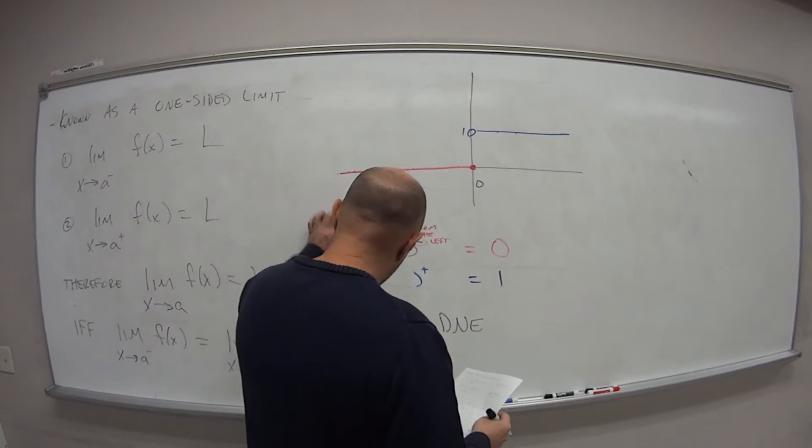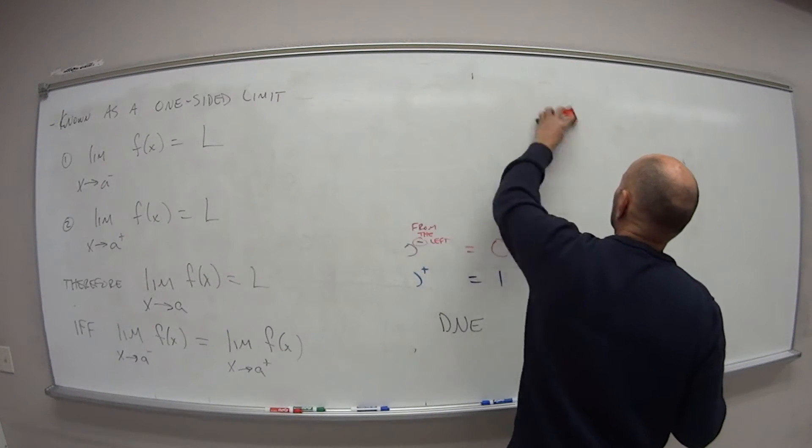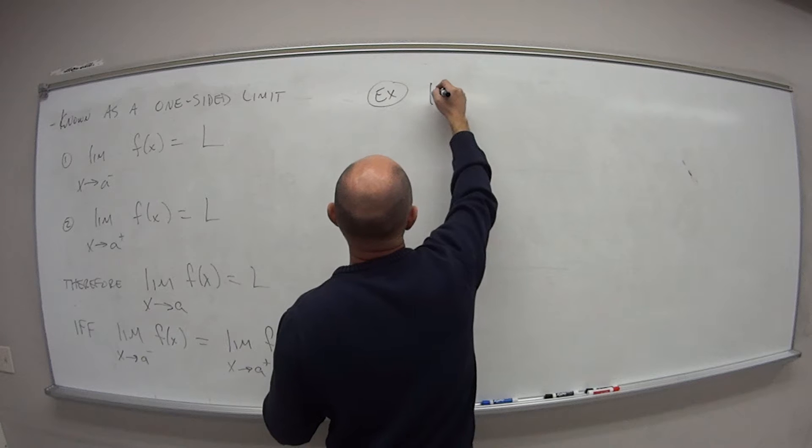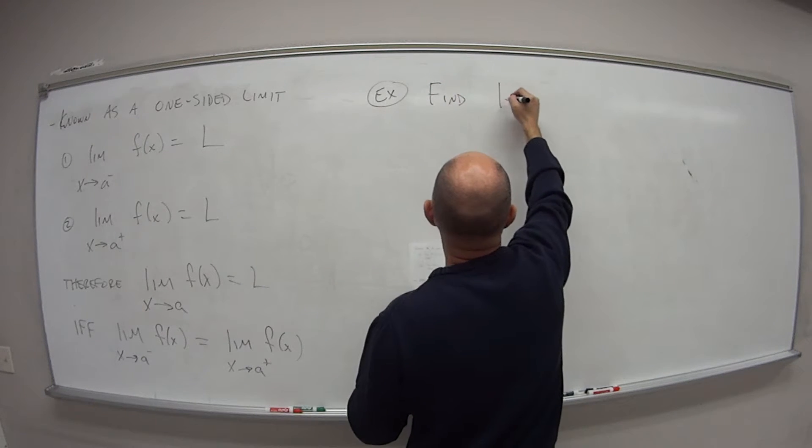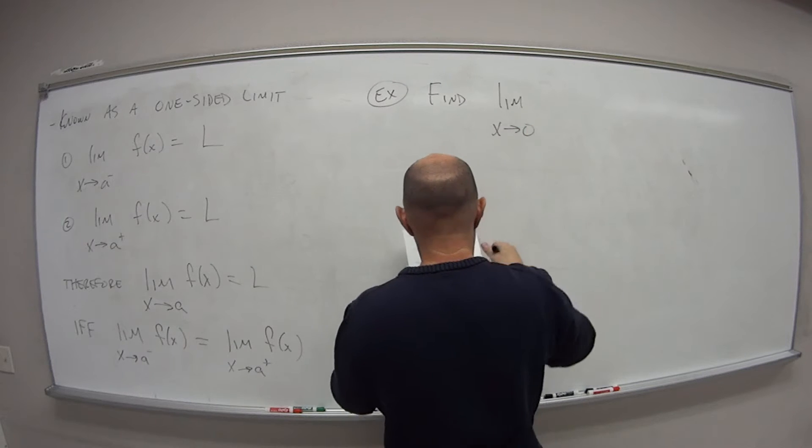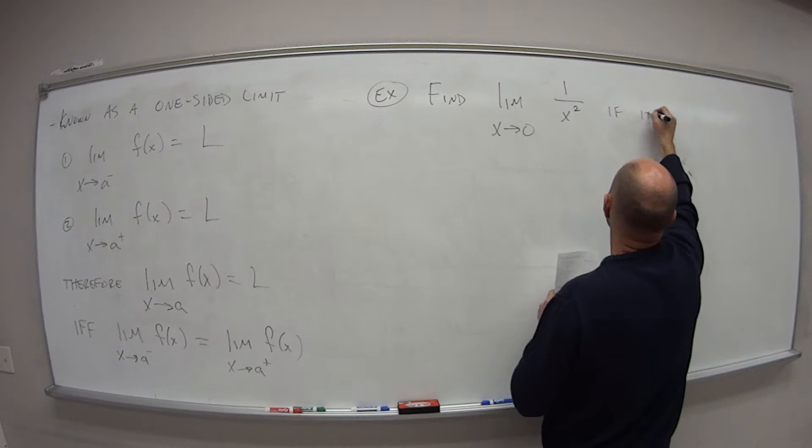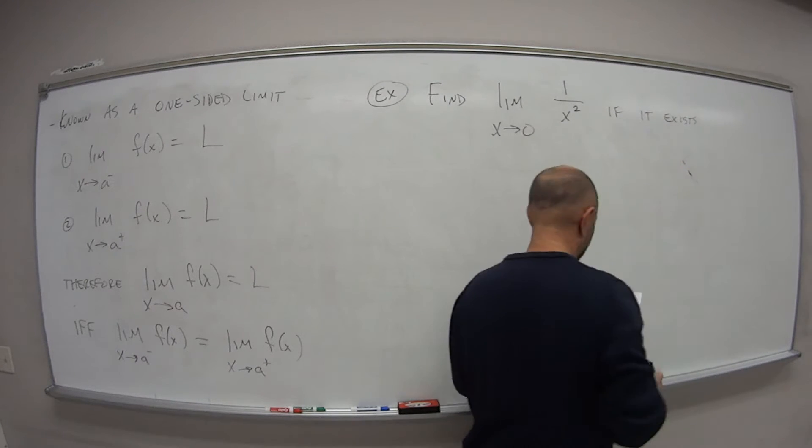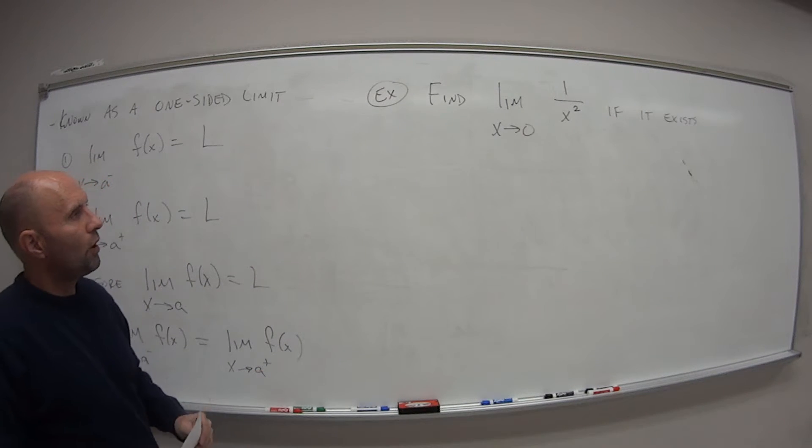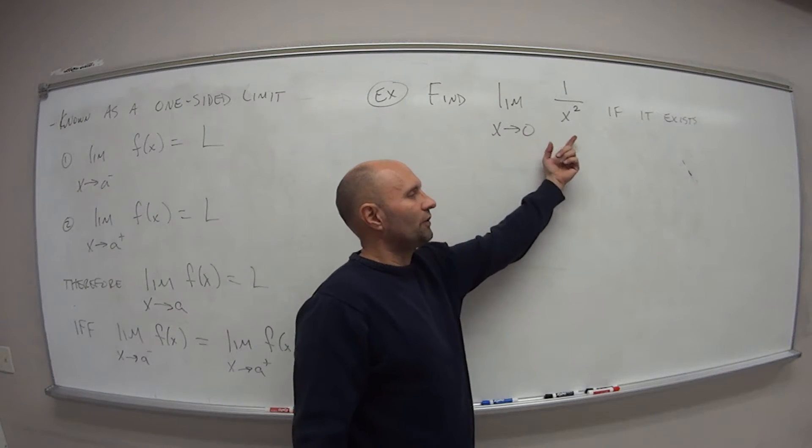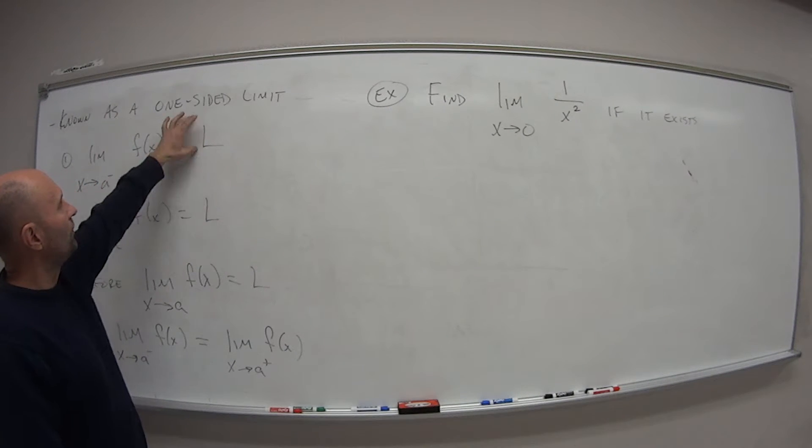So given that, let's try this one. Find the limit as x approaches 0 of 1 over x squared if it exists. So go ahead, I'll pause here for a second. You can pause the video if you'd like. It's probably a better option.